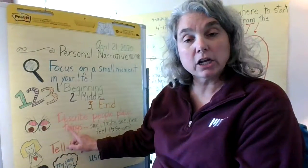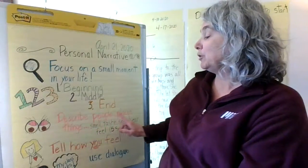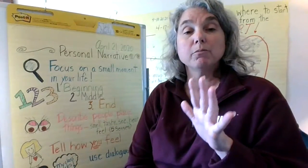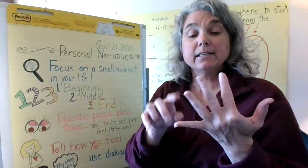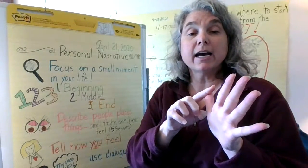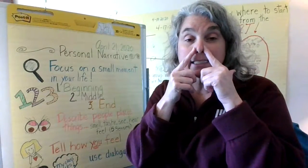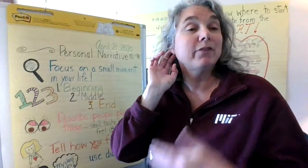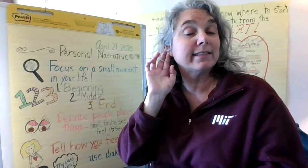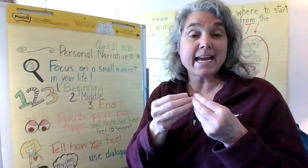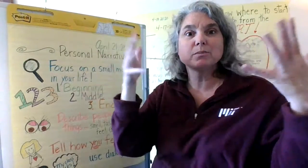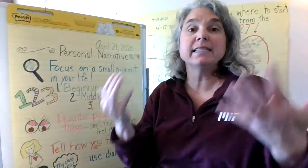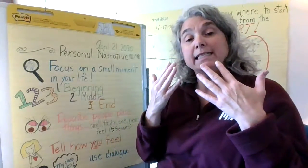Remember to describe people, places, and things. And in all of our classes we've been talking about the five senses: taste, smell, see, hear, and touch. What can I taste? What do I smell? What do I see? What do I hear? And what can I touch? For example, if I was writing about the beach, I might hear the waves. I might touch or feel the sand. I might taste salt water from the spray that comes up. I might see people swimming, seashells, or a sandcastle. So remember to use your five senses to help you write.